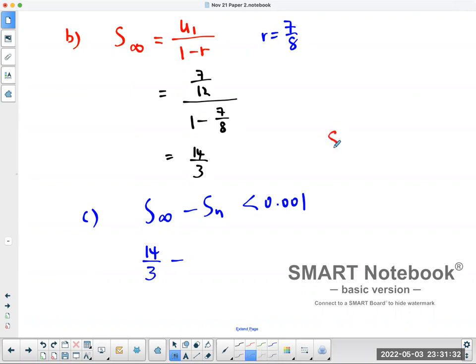Now, the sum of n terms is going to be u₁ times (1 minus r all to the power of n) divided by (1 over 1 minus r). So in this particular case, what is u₁? u₁ is 7 over 12.